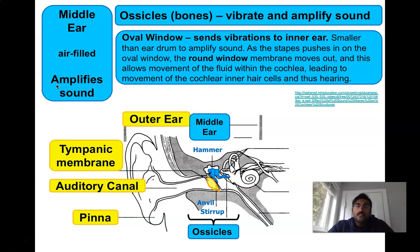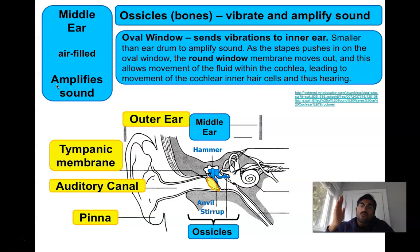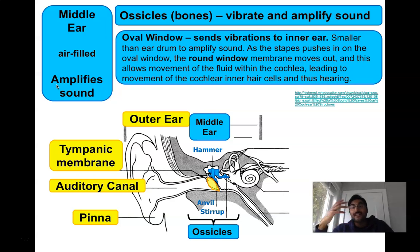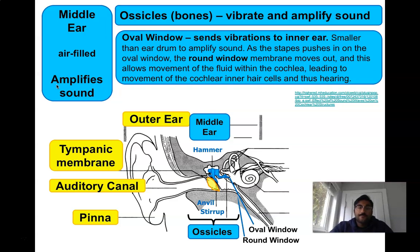There are little hair cells in this section of the ear which move, and as they bend they send information to the brain about the pitch and loudness of the sounds that you're hearing.